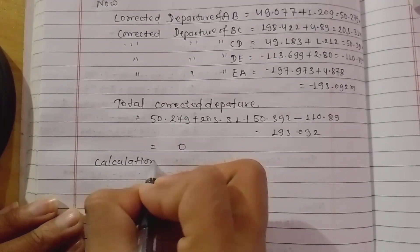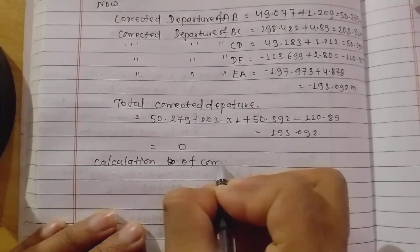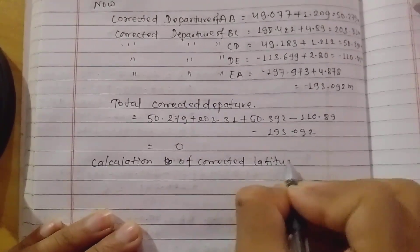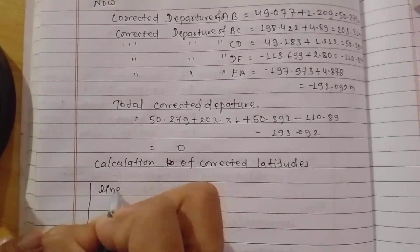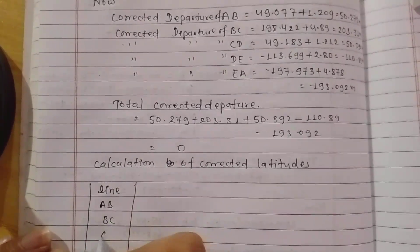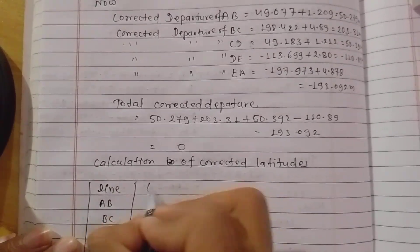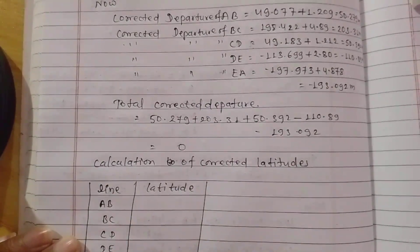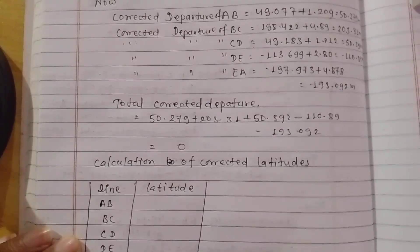Calculation of corrected latitude and departure — the table shows lines AB, BC, CD, and further lines. Latitude and departure values for each line are listed. Nature of correction — positive or negative — is noted. Corrected values are finalized.